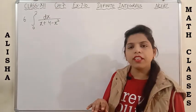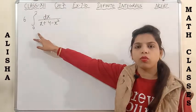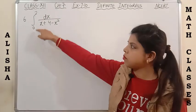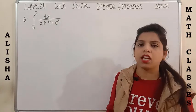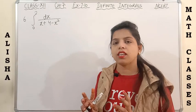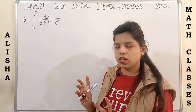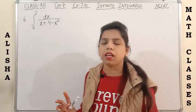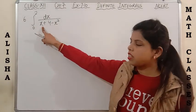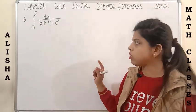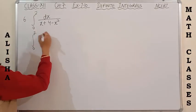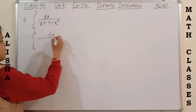Following that method, let's proceed to question number 6. The question is integration with limits 0 to 2 of dx upon (x + 4 - x²). First of all, we have to understand which type of integration this is so that we can apply the particular formula. This is actually in the form of a quadratic equation, so we have to make a complete square.